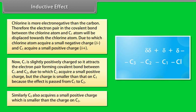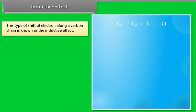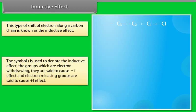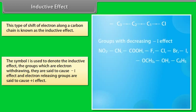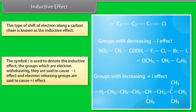Similarly, C3 acquires a small positive charge smaller than that on C2. This shift of electrons along a carbon chain is known as the inductive effect, symbolized by I. Groups that are electron-withdrawing cause a negative I effect, and electron-releasing groups cause a positive I effect.